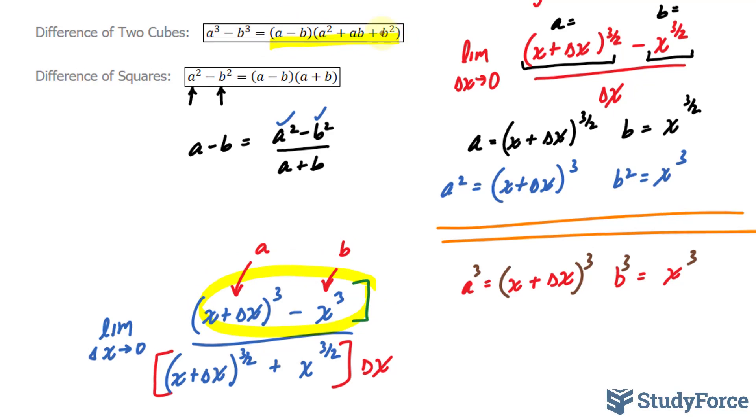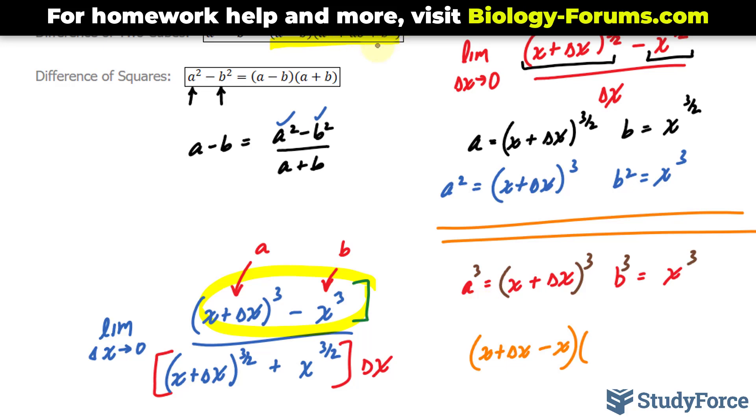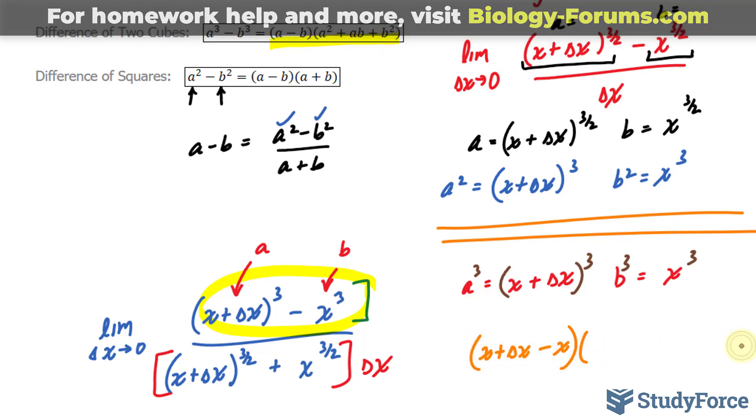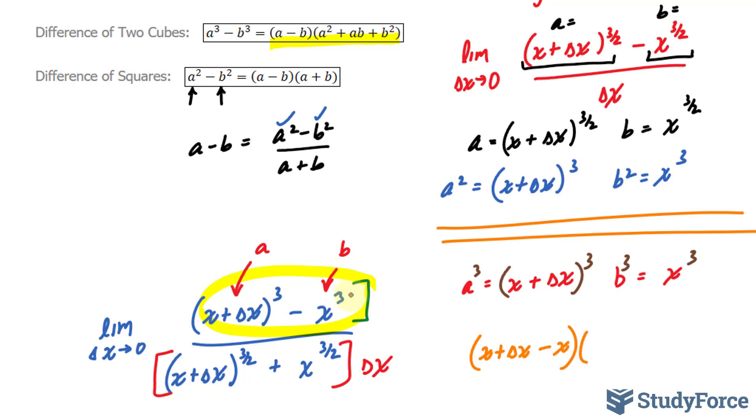In case you're confused here's what I mean. A minus b, remember we set a as x plus delta x, x plus delta x minus b which was x. Close bracket now we open this one. Remember this expression that we're writing in orange is going to replace the numerator.